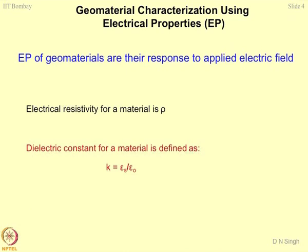Let us talk about geomaterial characterization using electrical properties. Electrical properties of geomaterials are basically their response to an applied electric field. We talk about two parameters: electrical resistivity defined as rho, and dielectric constant defined as small k. Going back to physics, 1 over 4π ε₀ relates to capacitance, where epsilon_s divided by epsilon_naught gives k — the relative permittivity of the material with respect to the permittivity of free space.